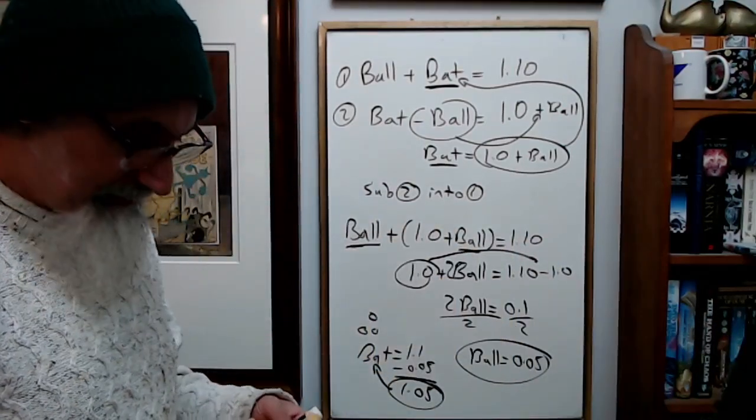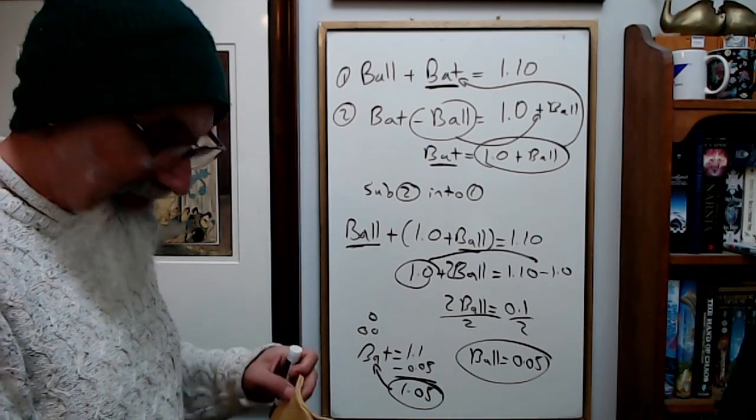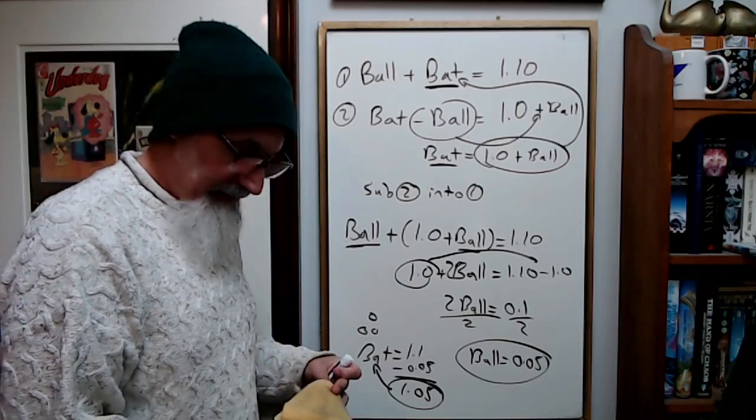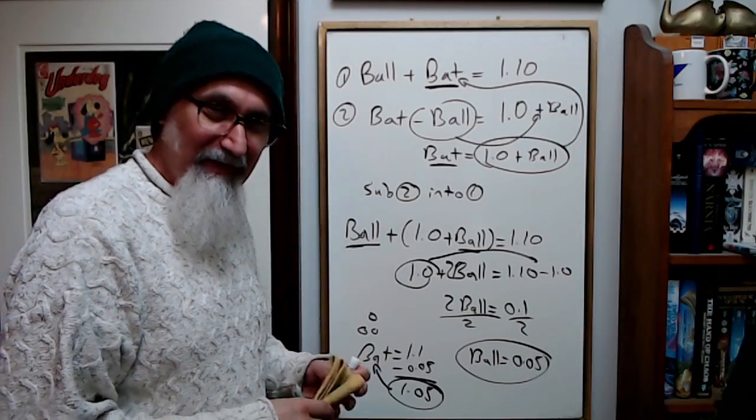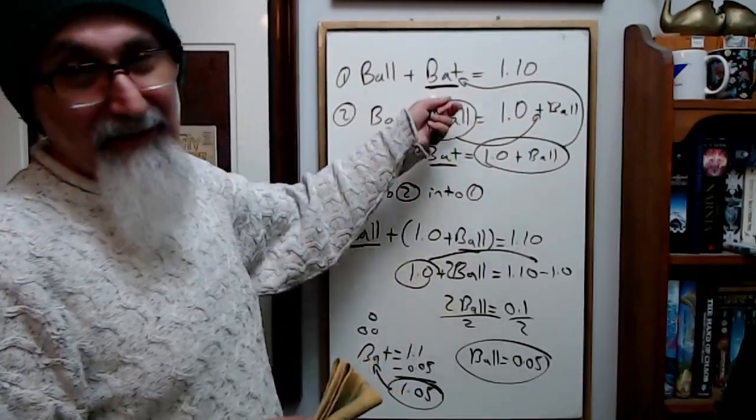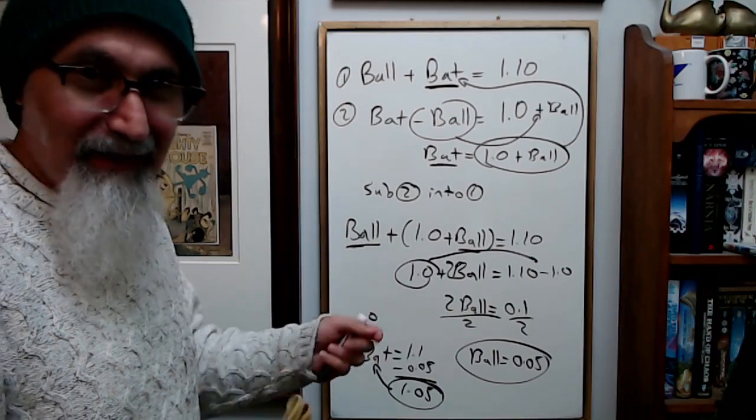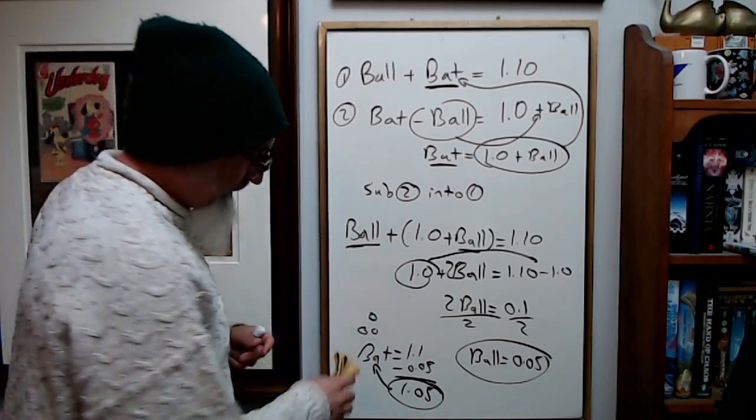This is, by the way, a common problem that you encounter, one of the generic problems they give in high school or as a puzzle. Because it's instinctive—people say, oh, something costs 1.10 and one has to be a dollar more than the other, oh it's a dollar. No, it's not.